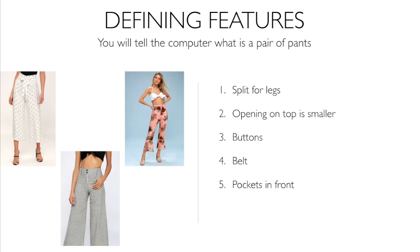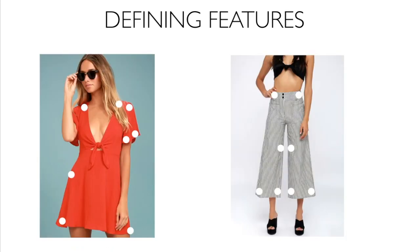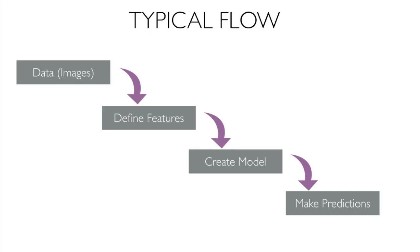Similarly, for pants, you define features like a split for the legs, an opening on top that varies in diameter from 24 to 45 inches, possibly buttons, belt buckles, and front pockets. When we as humans look at a pair of pants, we look at exactly these things — and that's essentially what you are defining for the computer, so the AI can create a model of what a pair of pants or a dress looks like.